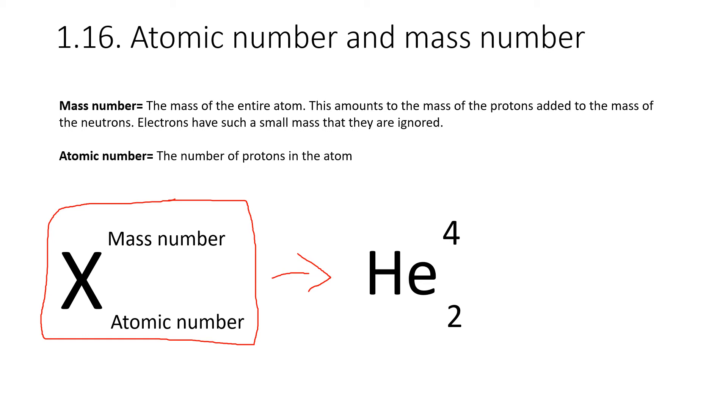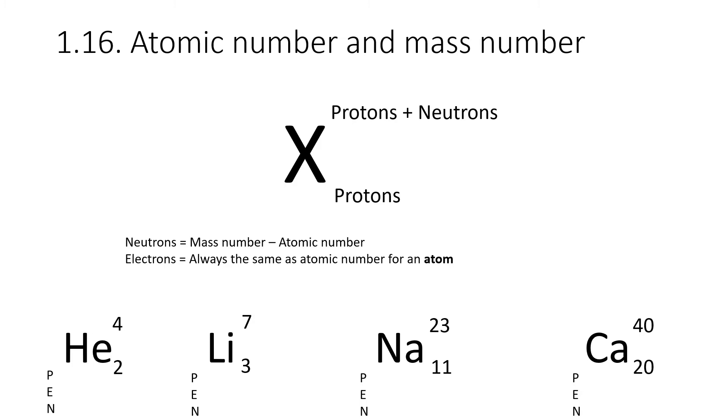Next is the mass number. The mass number is the mass of the entire atom. It's the amount of protons added to the amount of neutrons. Electrons are such a small mass that we ignore them. Using the mass number and the atomic number, there are some calculations that we can do. The atomic number tells you how many protons you've got, and the mass number is the number of protons added to the number of neutrons. This means that if you wanted to figure out the number of neutrons, you would just take away the atomic number from the mass number. You can also use this information to figure out how many electrons there are. Atoms of an element are always neutrally charged, which means the number of electrons is the same as the number of protons.